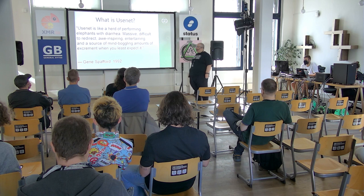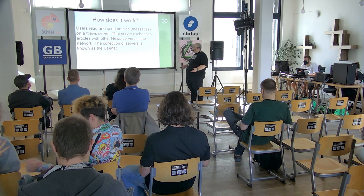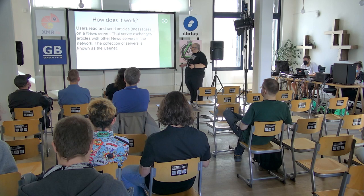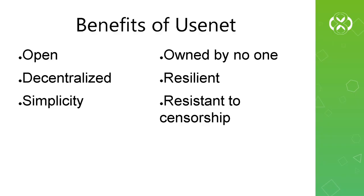So how does it work? Users read and send articles, or messages, to a news server. That server exchanges the articles with other news servers in the network, and the collection is called the Usenet. Some of the benefits are that it's open — everything about Usenet is completely open, from the transport protocols to the software. It's decentralized: every Usenet server is a thing unto itself. There is no central Usenet. As long as there's at least one Usenet server around, there's still a Usenet, and it doesn't matter who comes in and shuts down what.